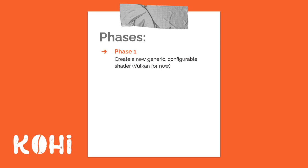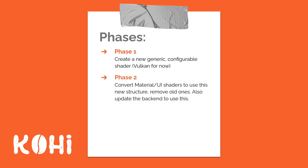Phase one: we're going to create a new generic configurable shader. Since we only have Vulkan as a back-end, that is the one we're going to support. Phase two: we will take the material and UI shaders out and replace them with this new structure, removing those old files from our code base. We're also going to update the back-end to use this new structure.